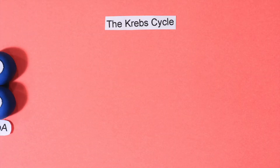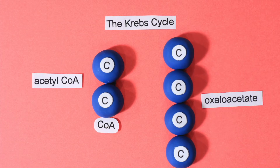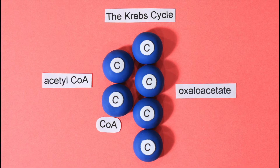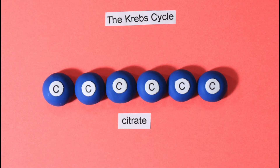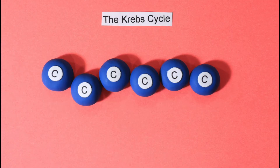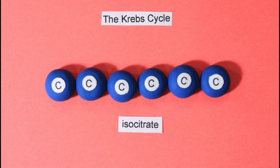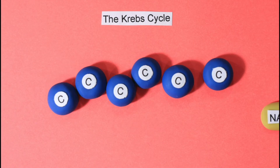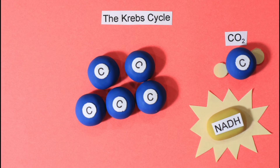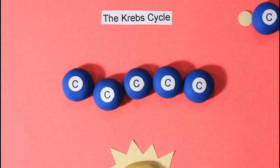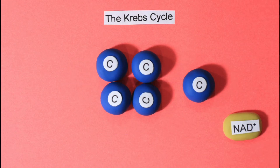Acetyl coenzyme A enters the Krebs cycle by joining with oxaloacetate. The two molecules rearrange and form citric acid. The citrate then rearranges into a molecule called isocitrate. The molecule loses a carbon atom that turns into carbon dioxide and makes energy, while becoming alpha-ketoglutarate.